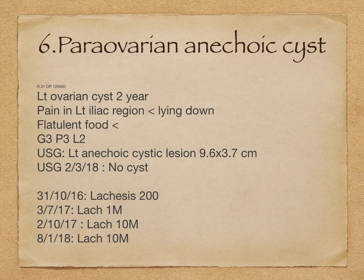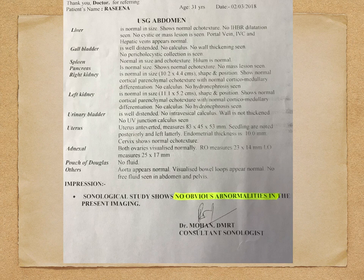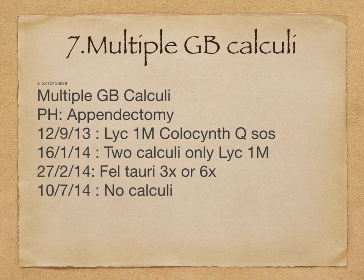After the medication there is no cyst. We prescribed the remedy Lachesis 200 initially, then Lachesis 1M, repeated after one or two months interval. The first scanning showed: left para-ovarian elongated tubular clear thin-walled anechoic cystic lesion measuring 9.6x3.7 cm. And after the Lachesis 10M, no abnormalities detected in the USG scan. So even though the cyst is very large, we can cure it completely with the help of the homeopathic remedy.